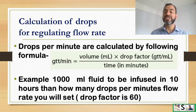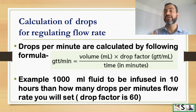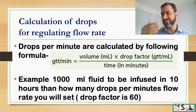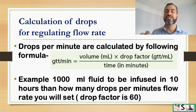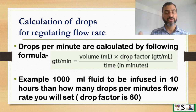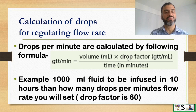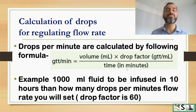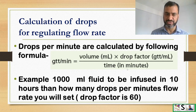We take the volume in ml and multiply it by the drop factor. The drop factor is different for every IV set and is written by the manufacturer — whether it is a micro drip set or a usual drip set. Then time refers to how many minutes the fluid should be infused.